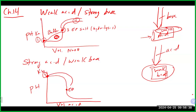Starting the titration up to before the equivalence point, much like the previous titration, you hit a buffer. You need one ICE table to figure out the concentration of your buffer components. Then you have two options: the Henderson-Hasselbalch equation or a secondary ICE table. Because this is a weak base, you may be given Kb, so if you go into the Henderson-Hasselbalch equation, make sure you use the pKa value and not the pKb value.